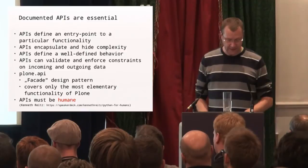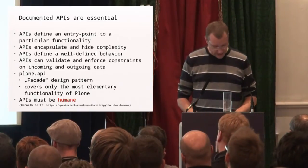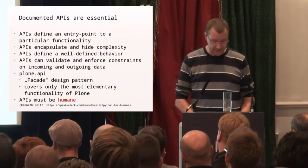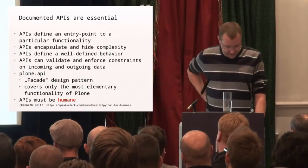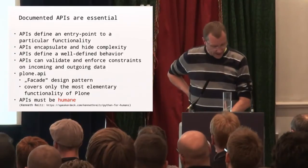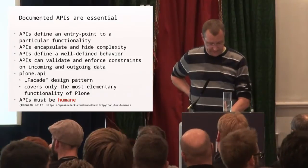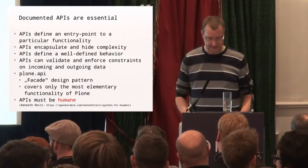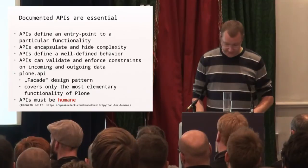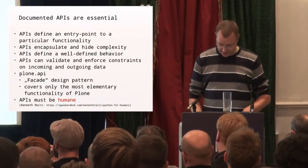In general, APIs should be humane. There is a very nice and important talk from Kenneth Reitz — he's the author of the Requests module. He gave a talk, I think last year, at a Python conference about Python for Humans. If you have time, please look at it. It's pretty impressive and explains more about what I'm thinking.